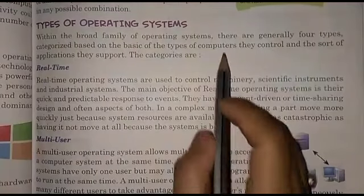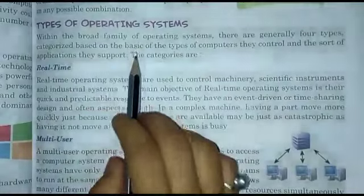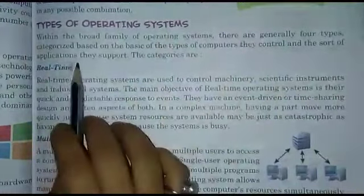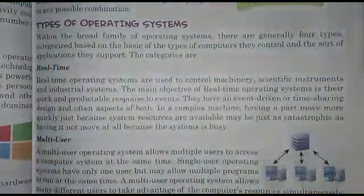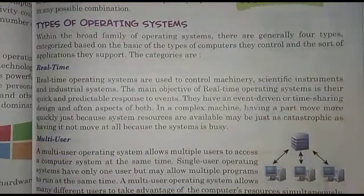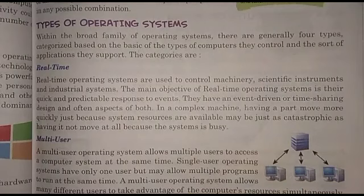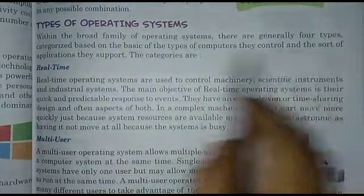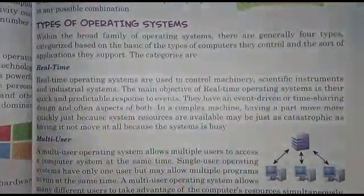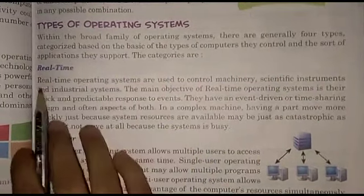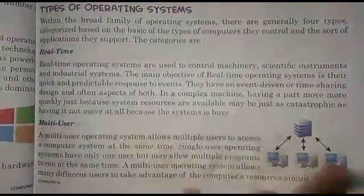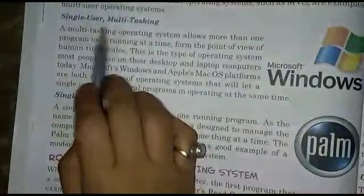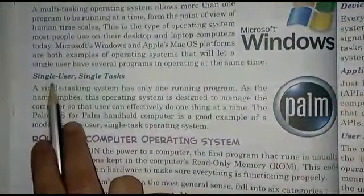Within the broad family of operating systems, there are generally four types of categories based on the types of computers they control and the sort of applications they support. The four categories are: number one, real-time; number two, multi-user; number three, single-user multi-tasking; and number four, single-user single-task. First, we will study about real-time.